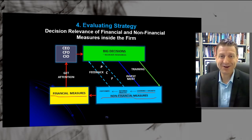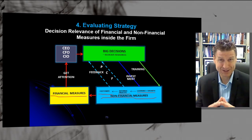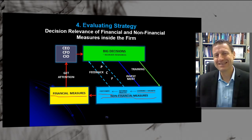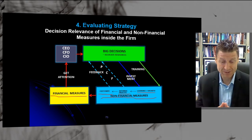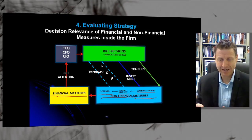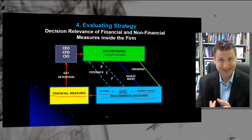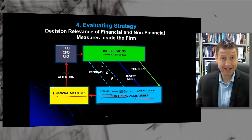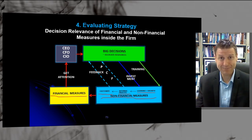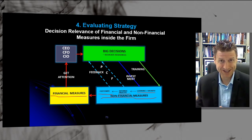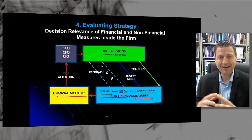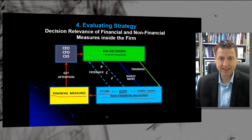Of course there's the customer — another part of the balance scorecard. Are they satisfied? Are they going to come back? The famous hotel group Hilton asks two major questions: what is the likelihood that you'll return to the hotel after your stay, and what is the likelihood that you would recommend us to a friend? Researchers in academia studied the Hilton chain on those two dimensions and found they were related to future financial performance of that hotel chain.